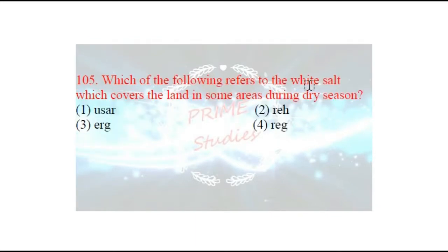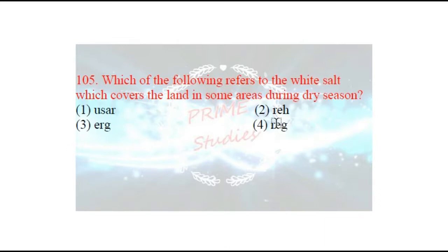Next question: which term refers to the white salt which covers the land in some areas during the dry season? Jo bhi dry season hota hai, matlab sukha season hota hai, us time pe ek white salt ki parat zameen ke upar chadh jaati hai — usko hum kya bolte hain? Usko bolte hain 'reh' — iska doosra naam color bhi hota hai.